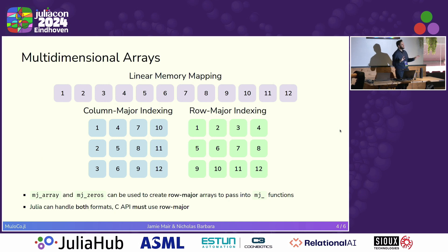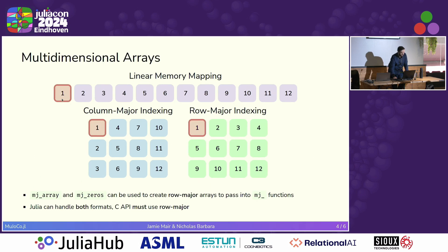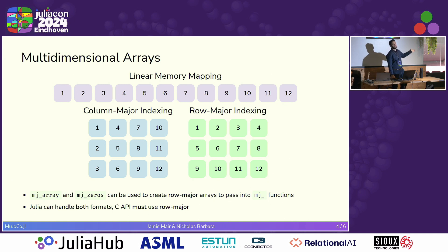Now I'll explain why we use mj_zeros. Under the hood we're calling C functions that take pointers to linear arrays in memory. C and NumPy use row-major indexing, whereas Julia uses column-major. The same sized arrays map to different memory locations depending on the layout. We provide mj_array and mj_zeros to create row-major arrays for MuJoCo functions. Julia's type system lets you access these row-major arrays just like any other Julia array on the Julia side, but you do need to use them when passing into MuJoCo functions.